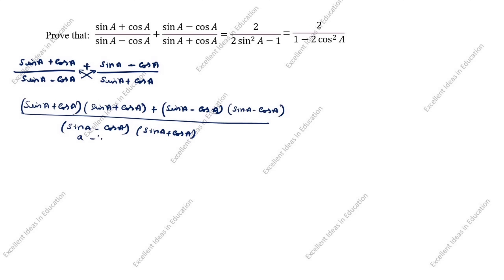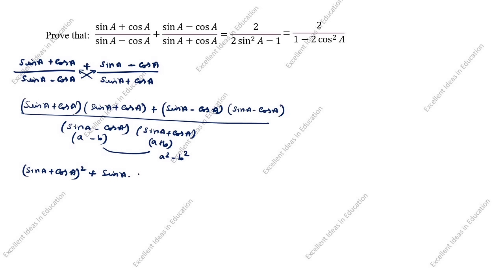You see this one is a minus b, and this is a plus b. What is the a minus b times a plus b formula? It gives a square minus b square. Next step: sin a plus cos a times sin a plus cos a. So how will we write this one? Sin a plus cos a the whole square, plus sin a minus cos a the whole square, divided by this — where a is sin a.